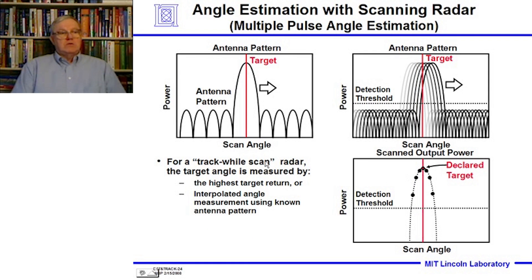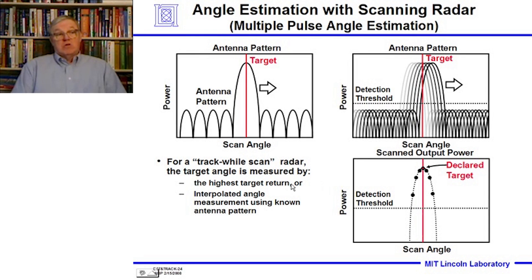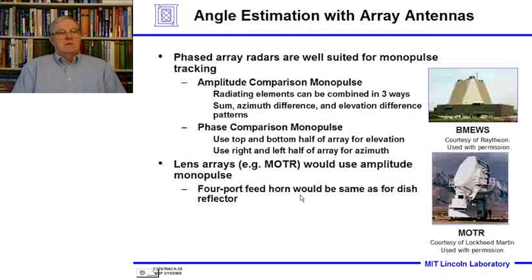Radars that measure angle and track while the antenna is mechanically rotating are called track-while-scan radars. Angle is measured either by taking the highest target return or by interpolation using the known antenna pattern or a similar technique.